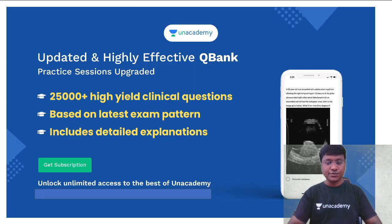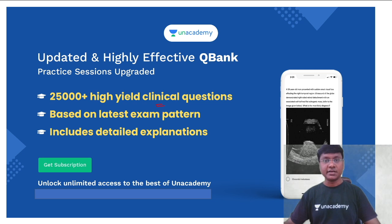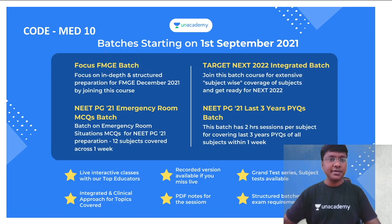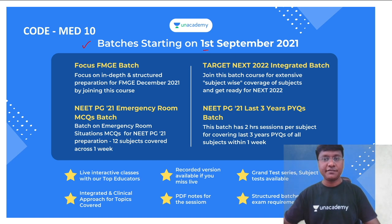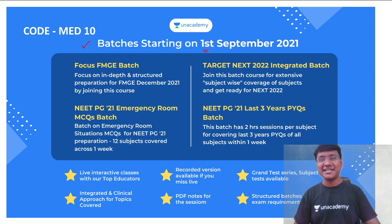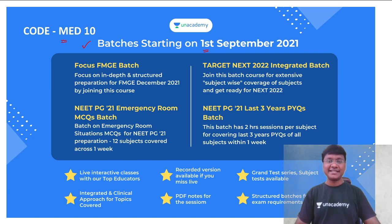Before starting the session, let me give you updates from Anacademy. Anacademy has come up with a very important question bank which includes only clinical questions, and there are nearly around 25,000 plus high-yield clinical questions. Anacademy is starting batch courses which have started already from the 1st of September, and these batch courses will be useful for students appearing for NEETPG as well as the FMG exam. To get subscribed to these courses you can use my code MET10, wherein you will get an additional 10% discount on your subscriptions.